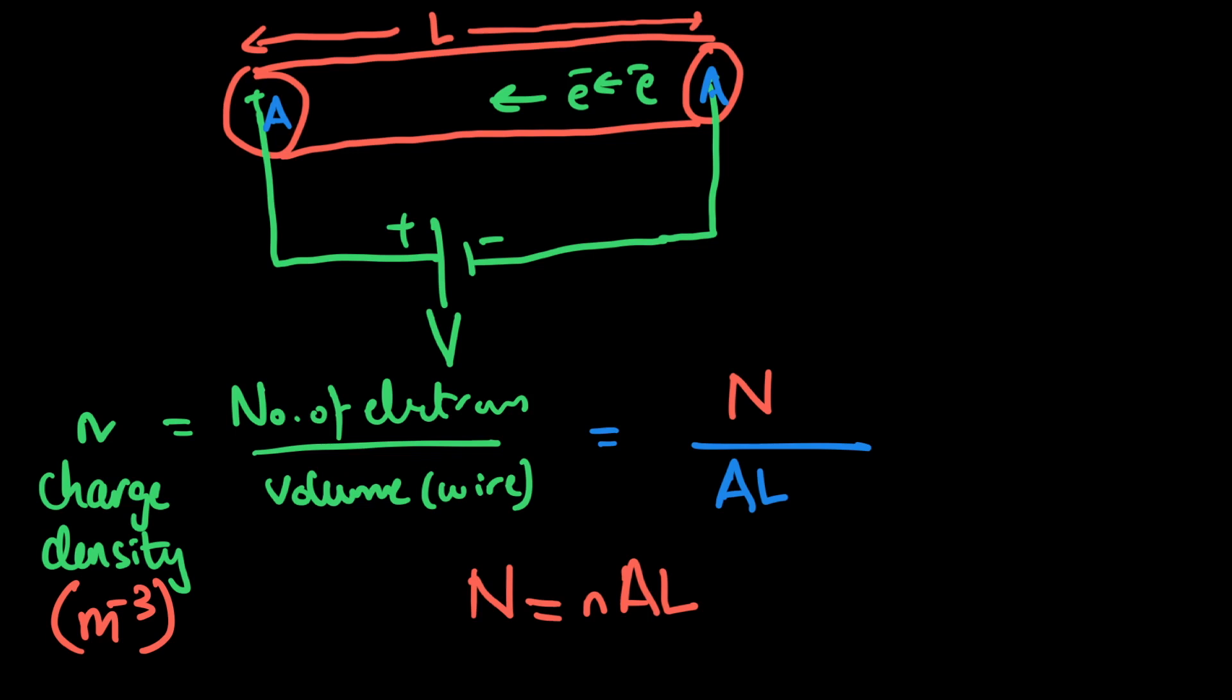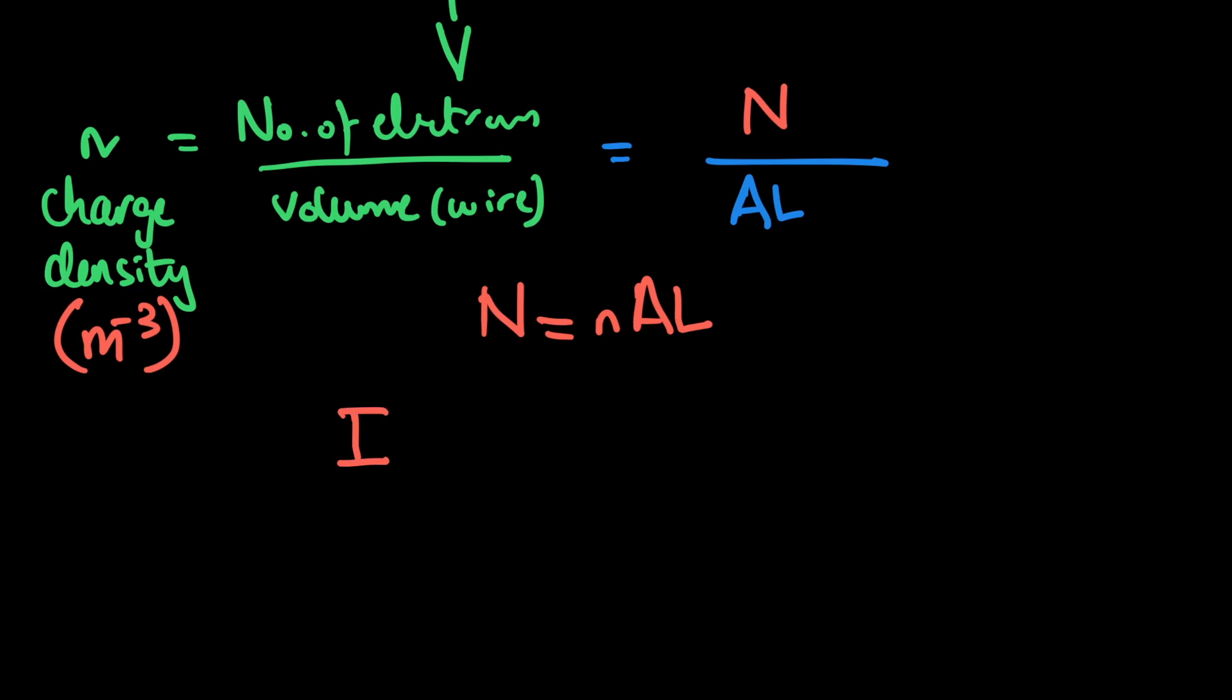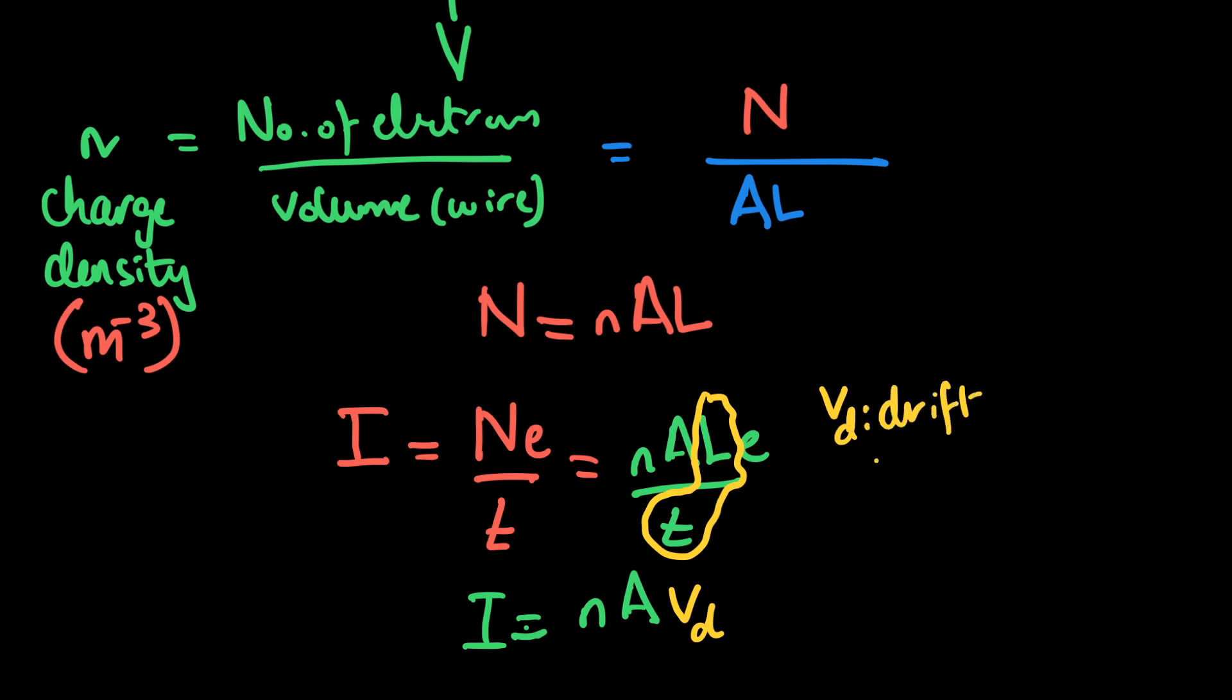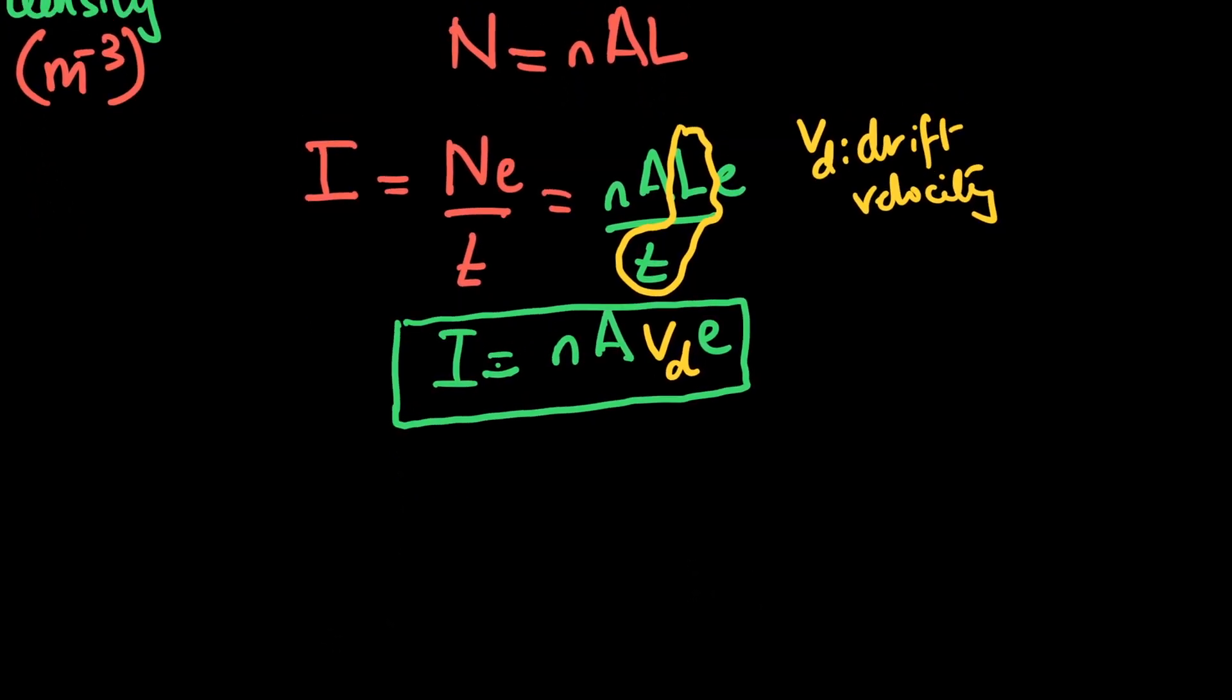Now once you get the number of charges through this formula, you should understand that current, which we derived as capital N into e over t, can be written as small n into A into L into e over t. You can simplify this and write it as I equals n A. Look carefully, you get length over time, this is the length of the wire and t is the time. This gives you drift velocity Vd.